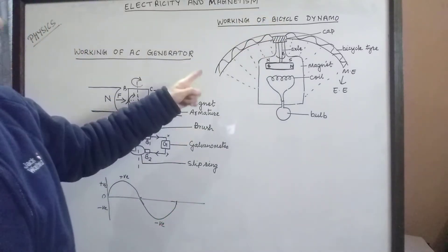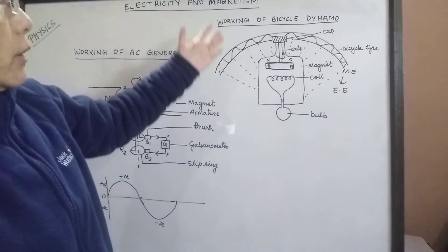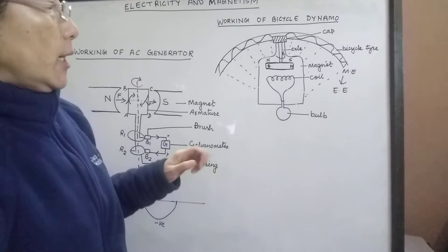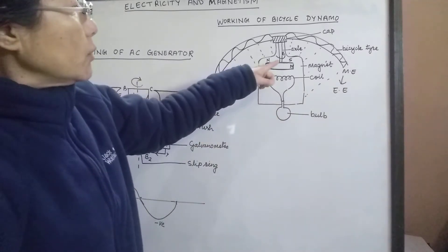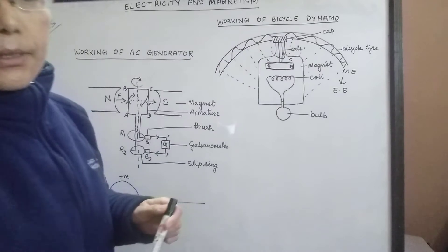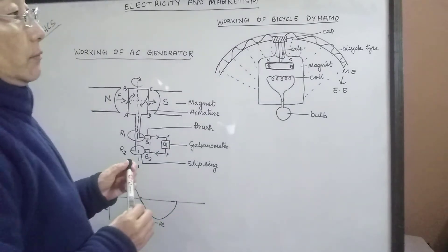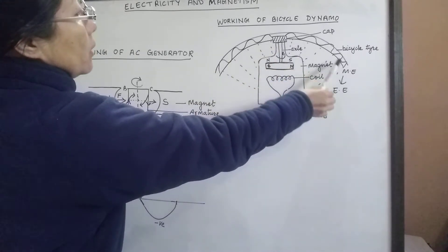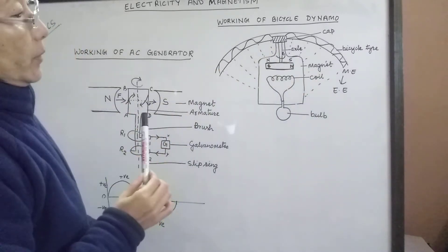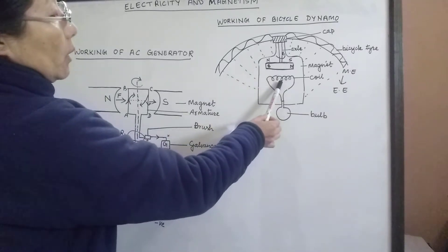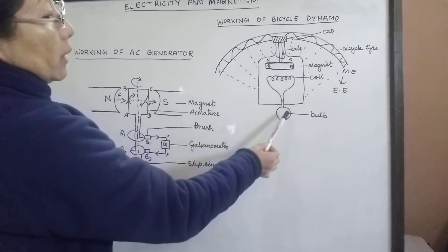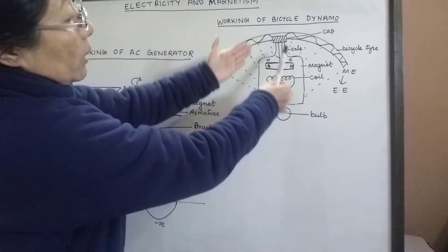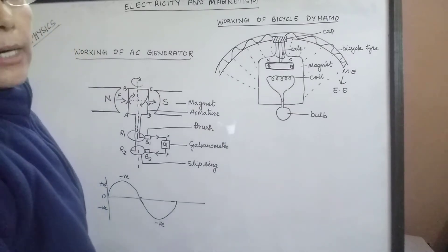Now we will see the structure before starting the working. A bicycle dynamo is made up of a permanent magnet. The magnet is suspended at this position with the help of an axle, and there is a cap at the top of the axle. The cap rotates when the bicycle tire starts rotating. Close to the magnet there is a coil, and the coil is made into a complete circuit by fitting it with a bulb. This whole arrangement is kept inside a container to protect the bicycle dynamo.